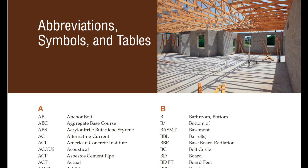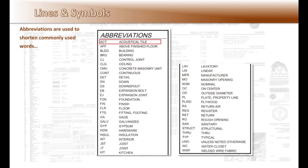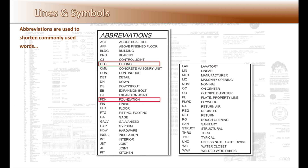Becoming familiar with abbreviations is important in saving time reading drawings. Also refer to reference section 7 of the book for a comprehensive list. Some examples of common abbreviations are: ACT for acoustical tile, CJ for construction joint, CLG for ceiling, FTN for foundations, and very common on drawings, TYP for typical and UNO for unless otherwise noted. Both TYP and UNO need to be paid special attention to when estimating on a project.